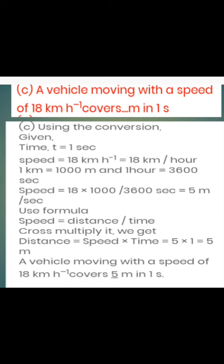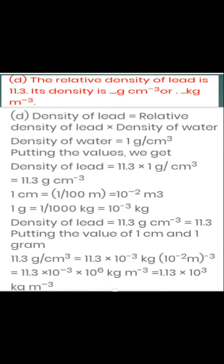The relative density of lead is 11.3. We need to find its density in g/cm³ and kg/m³. Relative density is the ratio of the density of an object to the density of water. So density of lead = 11.3 × 1 g/cm³. You should know that density of water is 1 g/cm³, and the conversion gives 1000 kg/m³ equivalent.